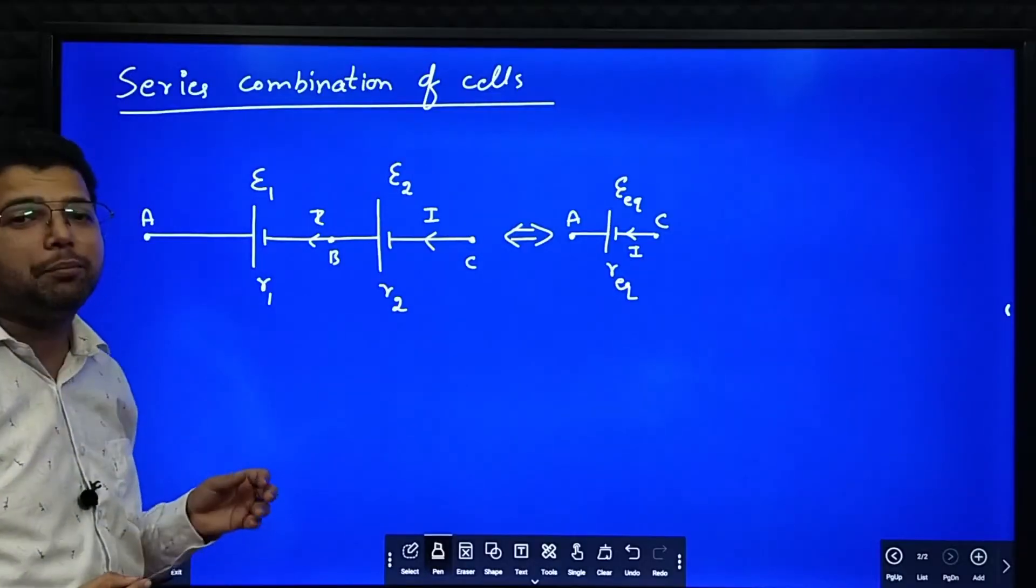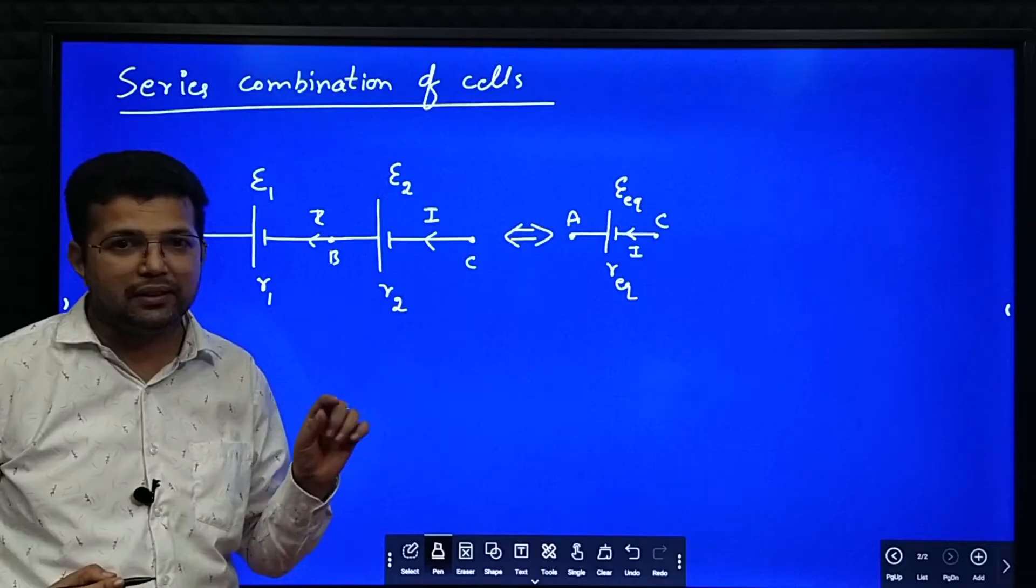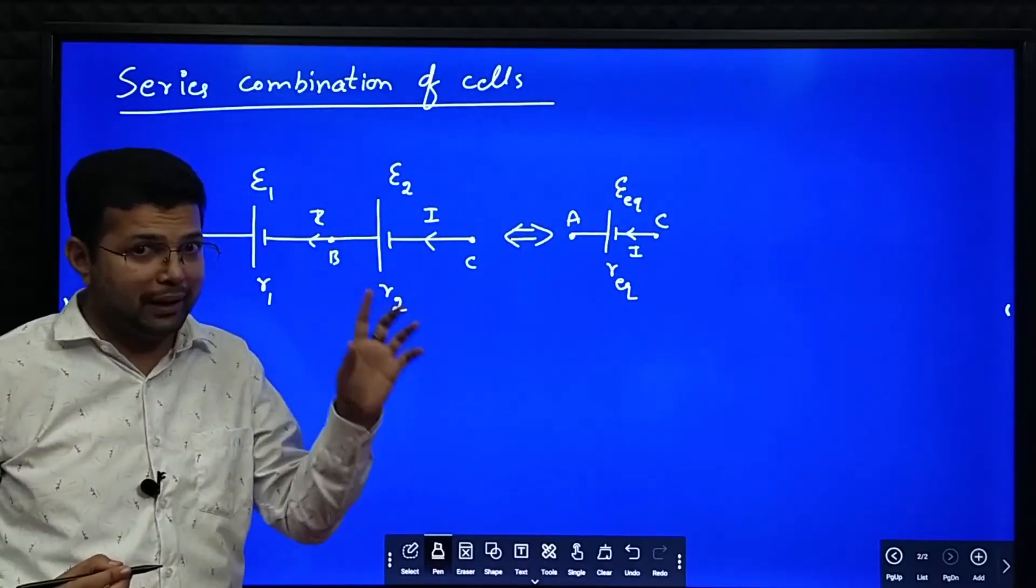Now we know the relationship between EMF, terminal potential difference, current and internal resistance, that is V equal to E minus IR.